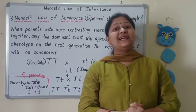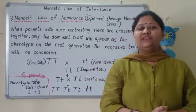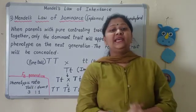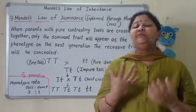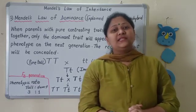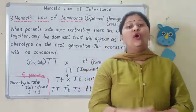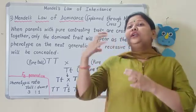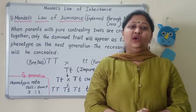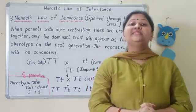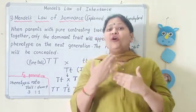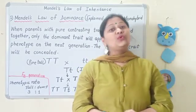Before coming to the law, we should know a few basic things. According to Mendel, characters — like height or color of the flower — Mendel performed his experiment on the pea plant, which we have already seen in previous sessions. When we talk about characters, according to Mendel, characters such as height or color of the flower are controlled by factors. What Mendel called factors, today we call genes. These factors are present in pairs, which we have already discussed before.